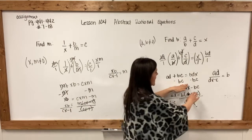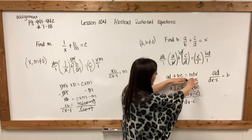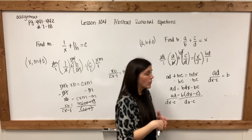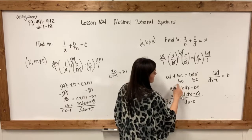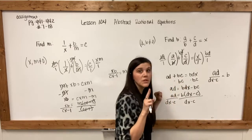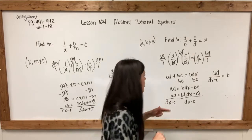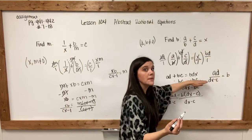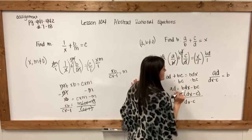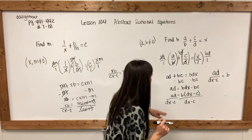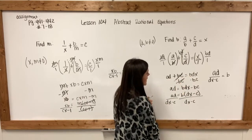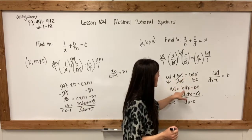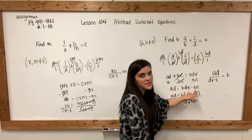I have a b on this side and a b on the other side, so I want to get the b's together on the same side of the equation. I'm going to subtract bc from both sides because it's being added and we always do the opposite. These two cancel out and I'm left with ad = bdx - bc.